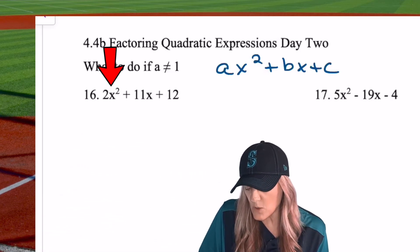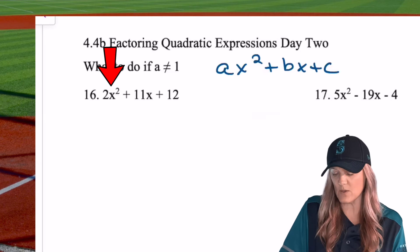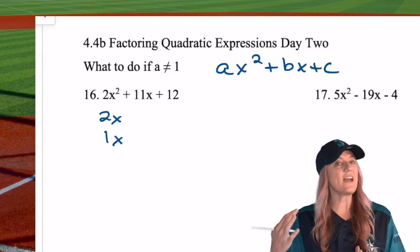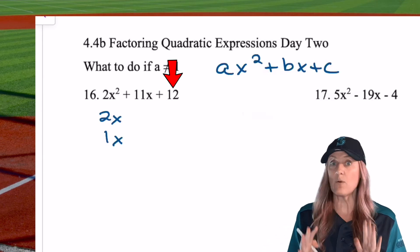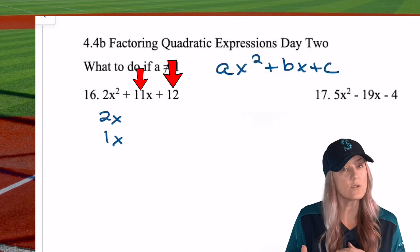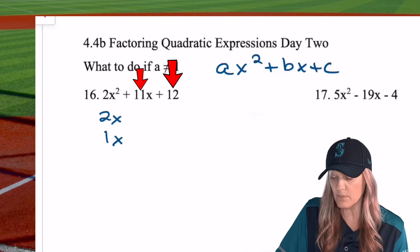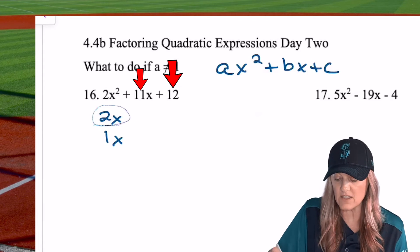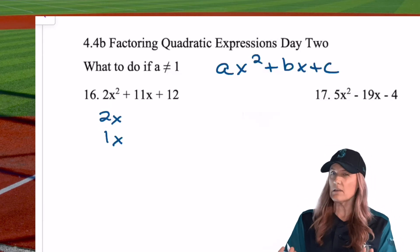So when I look at 2x squared, how can I get 2x squared? Well, 2x times 1x. And then I think of factors of 12. Now wait a second though, because it's not going to just be factors of 12 that add to 11, because one of those factors is going to get multiplied by this 2, right? So we have to just keep in mind that we have a little bit different.